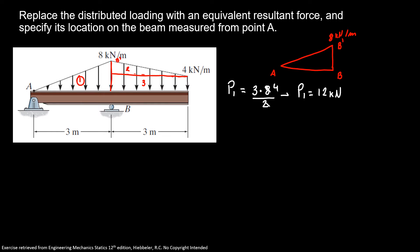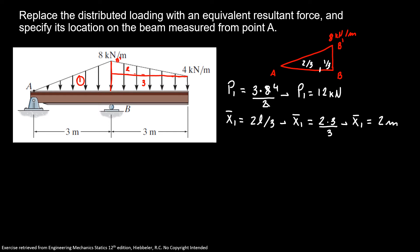Now since it's a triangle, I know my centroid in x is 1/3 from the height. So here I have 1/3 over L and here I have 2/3 over L. So measured from A, our x̄₁ is equal to L over 3, which gives x̄₁ = 1 meter from A.